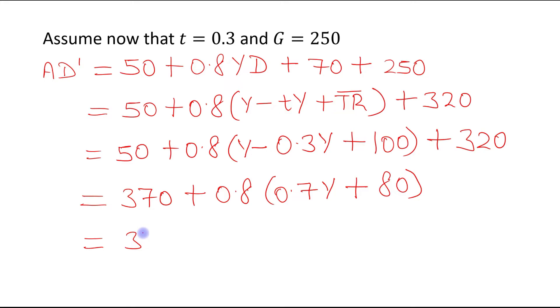This becomes 0.7Y plus 0.8 into 100 is 80, so 370 plus this will become 0.56Y plus 80. Next step: 370 plus 80 will become 450, so this is AD dash.